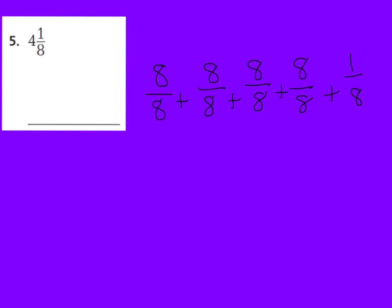For number 5, pause the video and answer: what would be the fraction greater than one whole for the mixed number 4 and 1 eighth? I came up with: one group of 8 eighths is one whole, two wholes, three wholes, four wholes, plus one more eighth. So the denominator stays 8, and the numerator is 8, 16, 24, 32, plus 1 more is 33. The answer is 33 eighths.